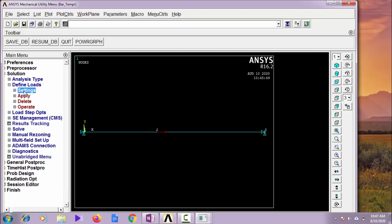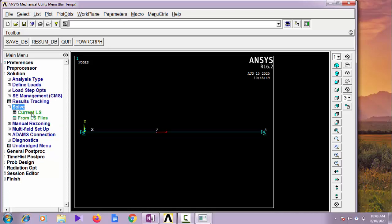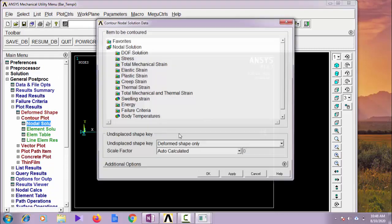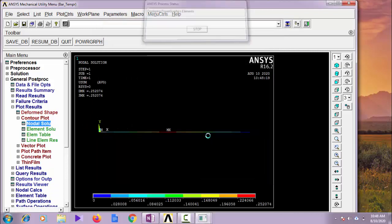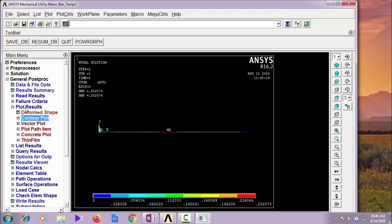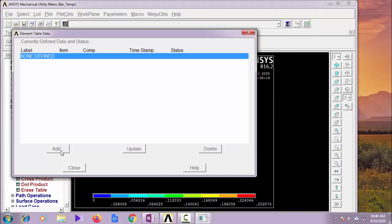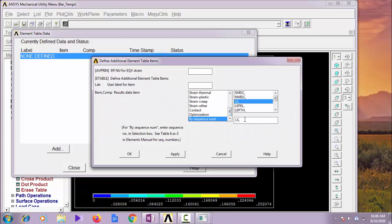And no need of anything, so directly we can solve this. Let us solve this. Solution is done. And let us plot the degrees of freedom solution. See, 0.252074 is displacement at node 2. Exactly, we are getting the same result.